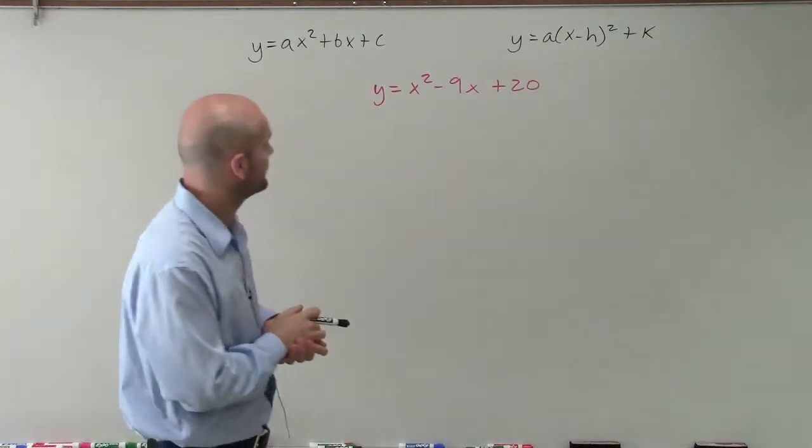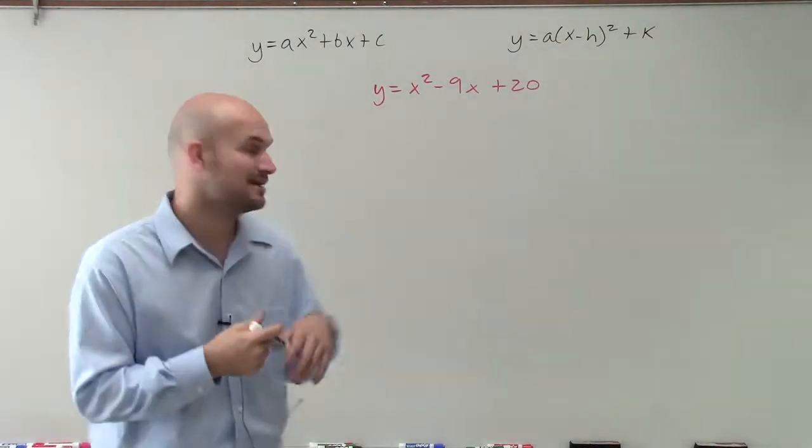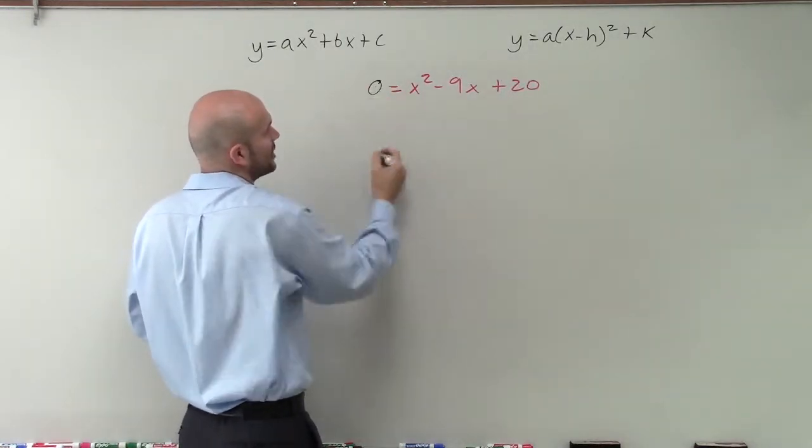Welcome. So last one we're going to do as far as solving by completing the square when we have a equals 1. The main important thing, again, that we're going to look into is making sure this is 0.